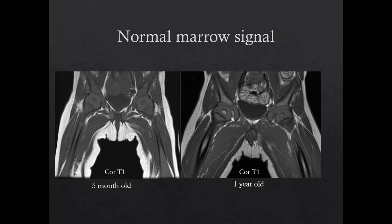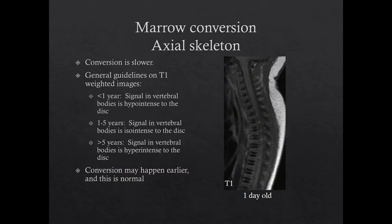Here are some more normal examples. On the left, the femoral head epiphyseal ossification centers have recently formed in this five-month-old. On this T1-weighted image, the femoral head epiphyses are of low signal and are still hematopoietic marrow because they are within six months of being formed. In this slightly older one-year-old patient on the right, the femoral head epiphyses have already converted to fatty marrow. In the axial skeleton, conversion to fatty marrow is slower, and red marrow may persist in the thoracic cage, the vertebral column, and pelvis throughout childhood and into adolescence.